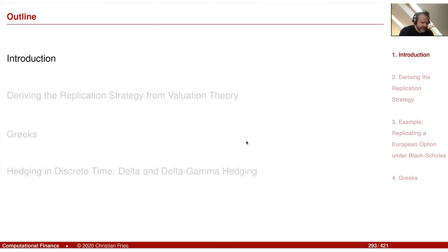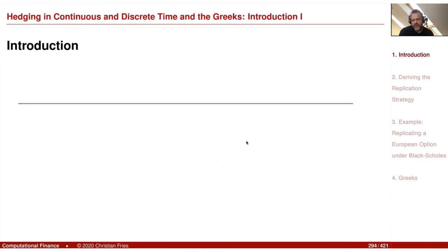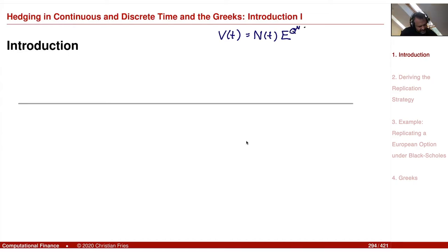Let's start with a small introduction. What we did so far was using the Monte Carlo method to calculate expectations. One motivation was that we can express the value of a financial derivative as an expectation. Once we have chosen the numéraire N, we can move to some equivalent martingale measure and then the price of the financial derivative can be expressed as an expectation of its future values, conditional on time t — that is the universal pricing theorem.